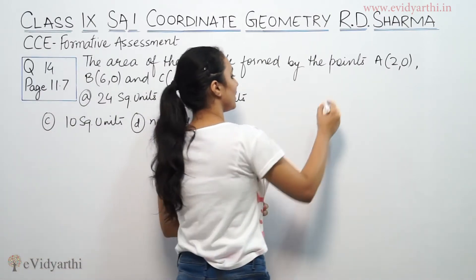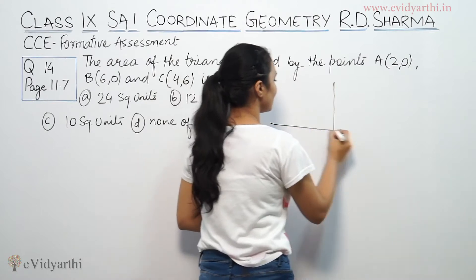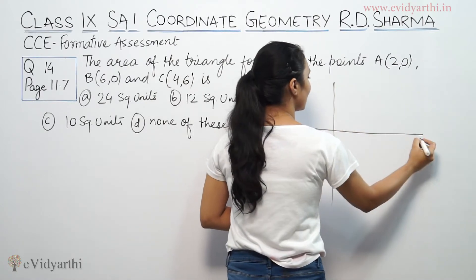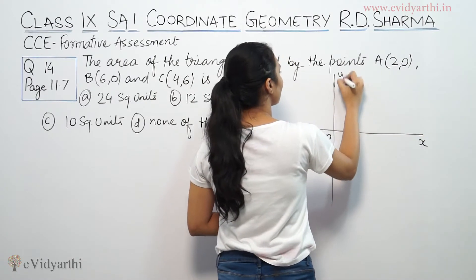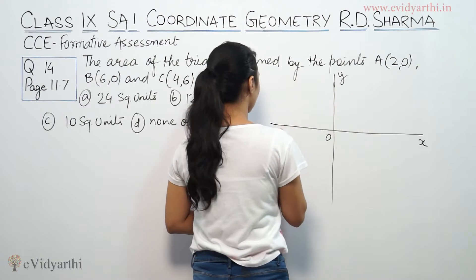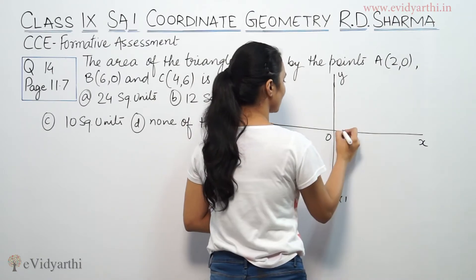So, this is the coordinate axis — this is x, this is y, this is y-dash and this is x-dash.